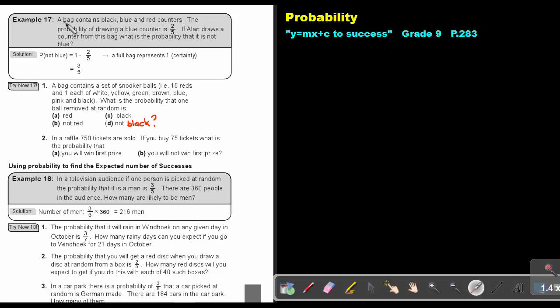Example 17, a bag contains black, blue, and red counters. The probability of drawing a blue counter is 2 out of 5. If Alan draws a counter from this bag, what is the probability that it's not blue? Now remember, the bag contains the full amount, which is represented by a certainty, which is 1.